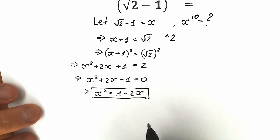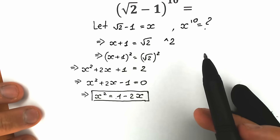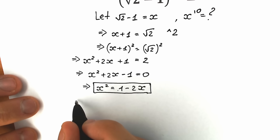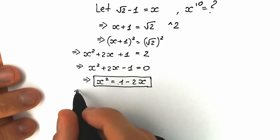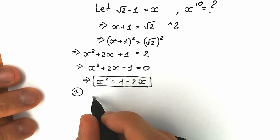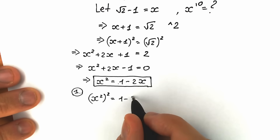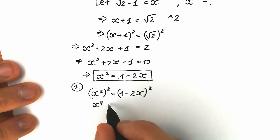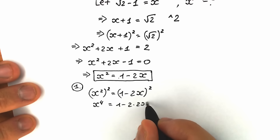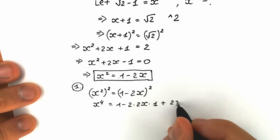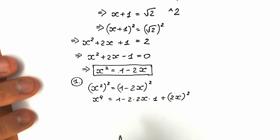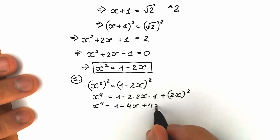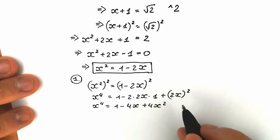Because we need to find x to the 10th power, let's get closer step by step. First, let's find x to the fourth power by raising both sides of x squared equals 1 minus 2x to the second power. We have x to the fourth power equals (1 minus 2x) squared, which expands to 1 minus 4x plus 4x squared. But we know x squared equals 1 minus 2x, so we substitute that in.